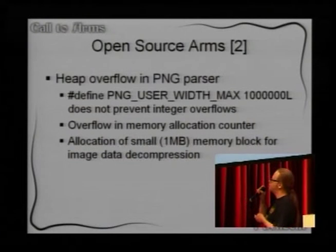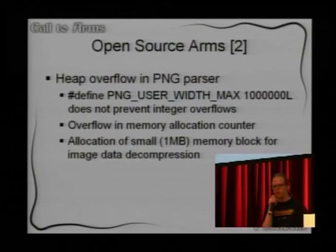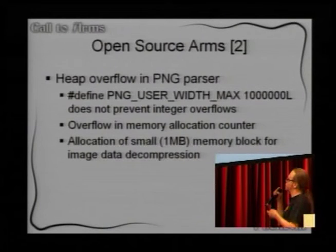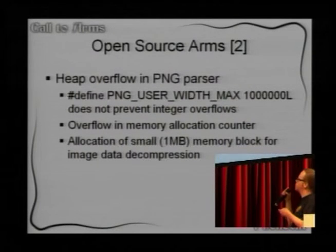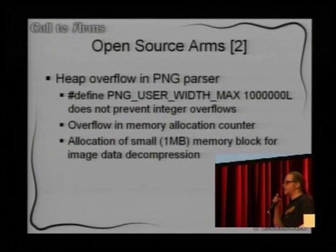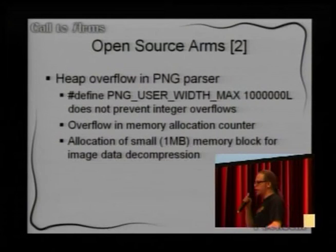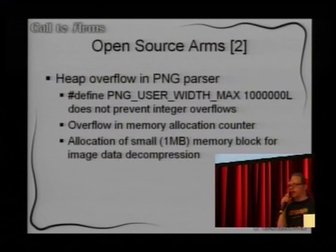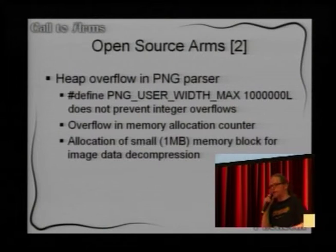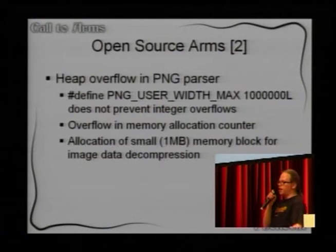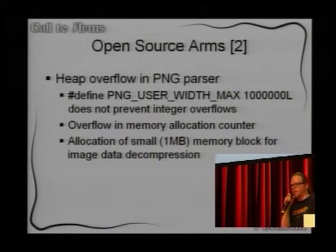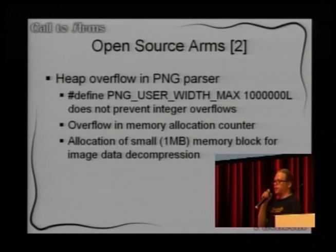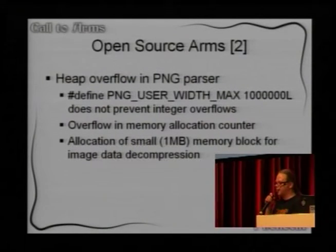Interestingly enough, the PNG guys actually try to protect coders from making mistakes by putting an arbitrary maximum value for the width and height, because the most classical image parsing attack is: width and height will be multiplied by each other to figure out how much memory you need, and if that's going to be over four billion, then it overflows.